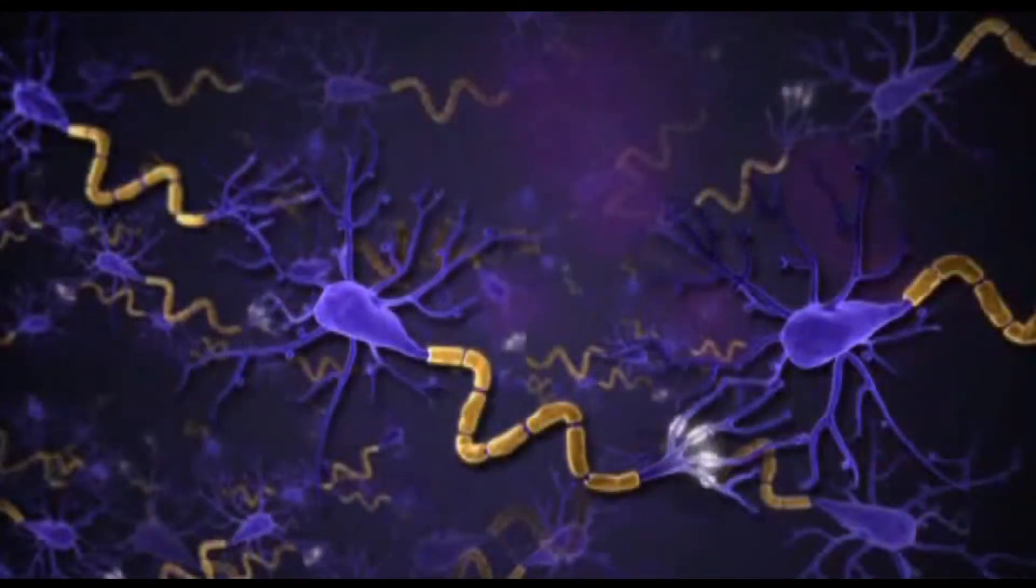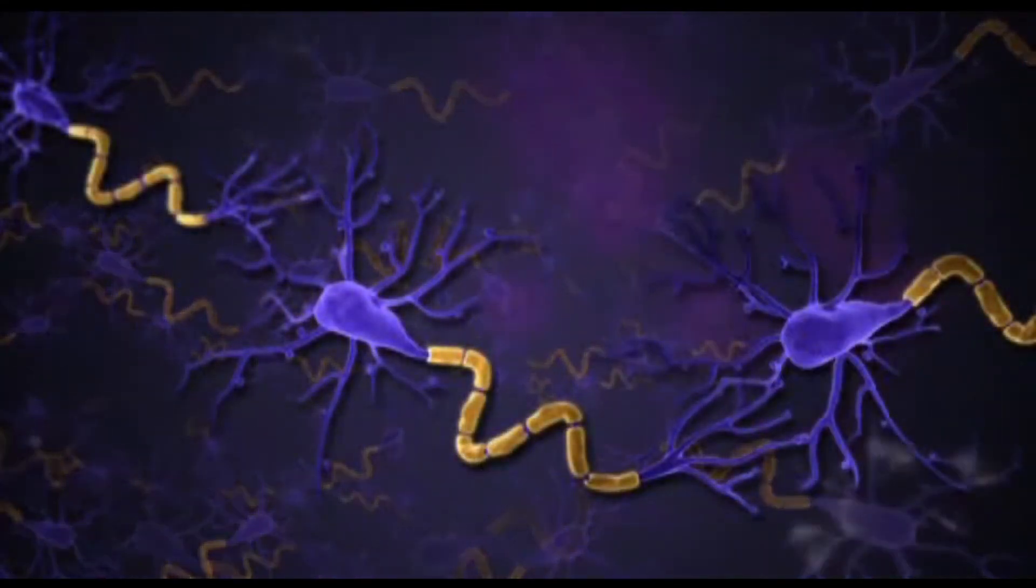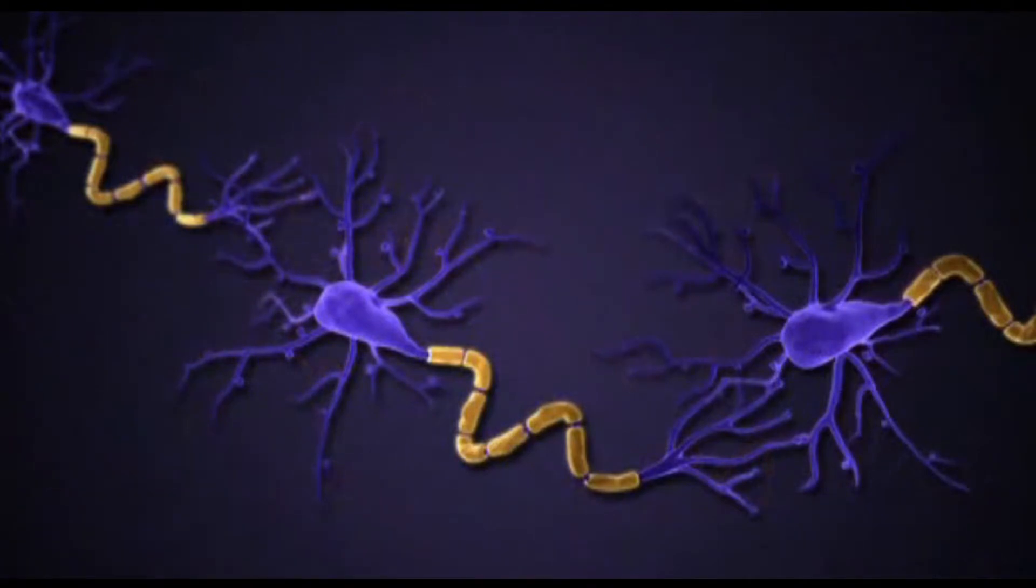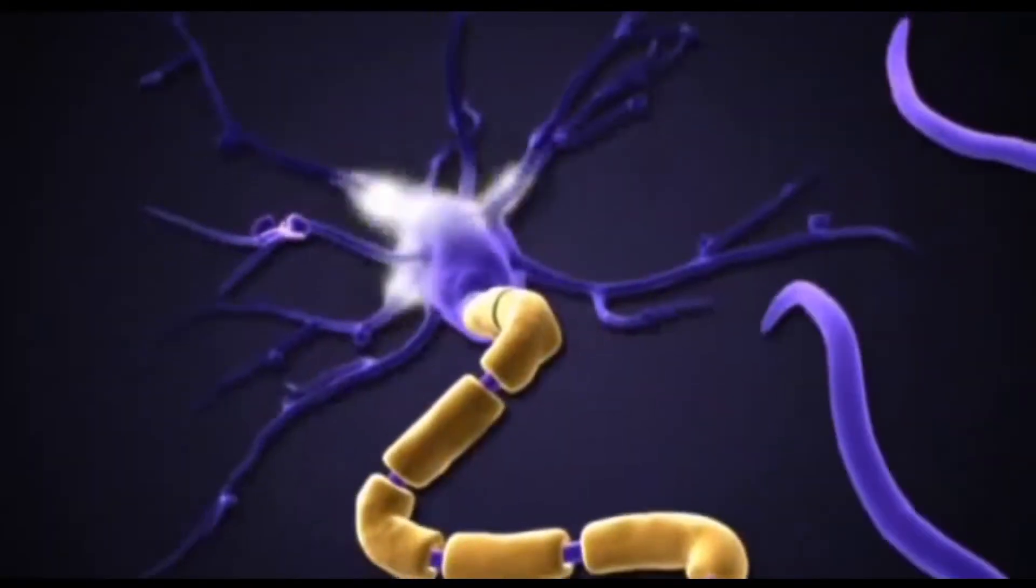We're going to be looking at these electrical impulses, these flashes which are called action potentials, crossing three neurons in a circuit here.